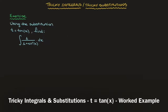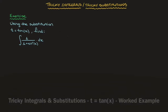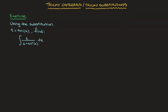Hi everyone. In this tutorial on tricky integrals and tricky substitutions, we're going to work through the exercise that we have here. We're told, using the substitution t equals tan of x, to find the integral of 1 over 1 plus sine squared of x.